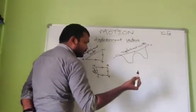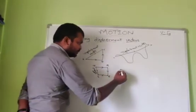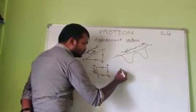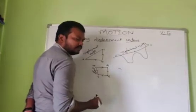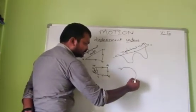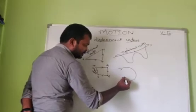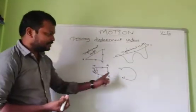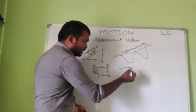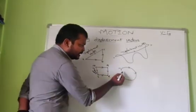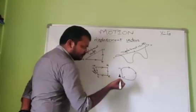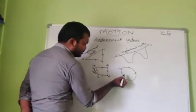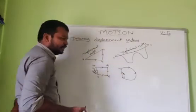Let us see one more example and then we will close this session. You start at point M and the body follows a path to reach point N. Can you say the displacement vector? You need not follow the actual path. Just draw a straight line from M to N, and this is called the displacement vector.